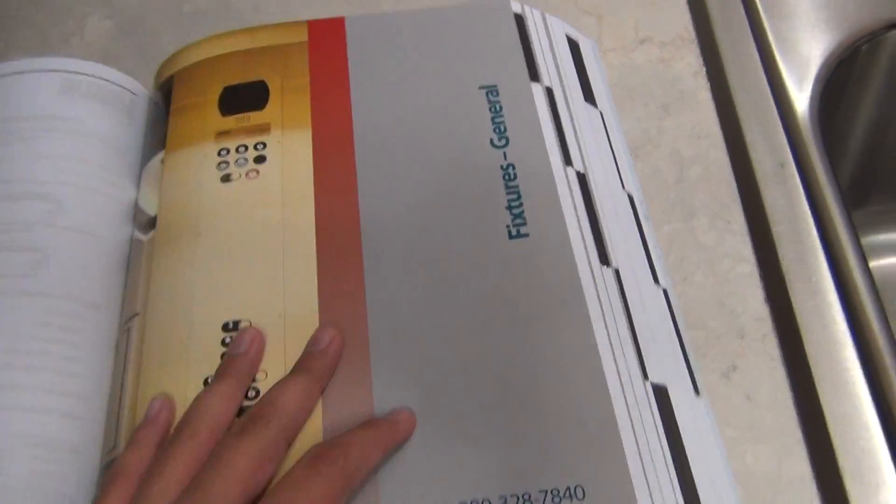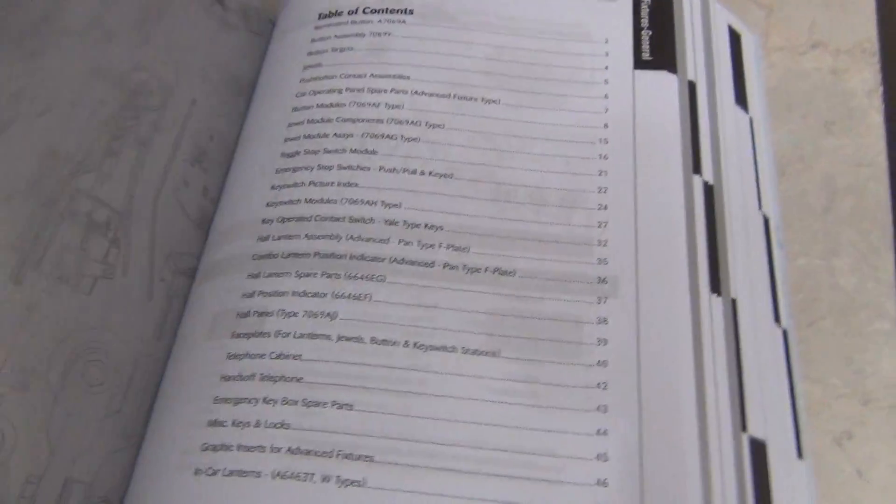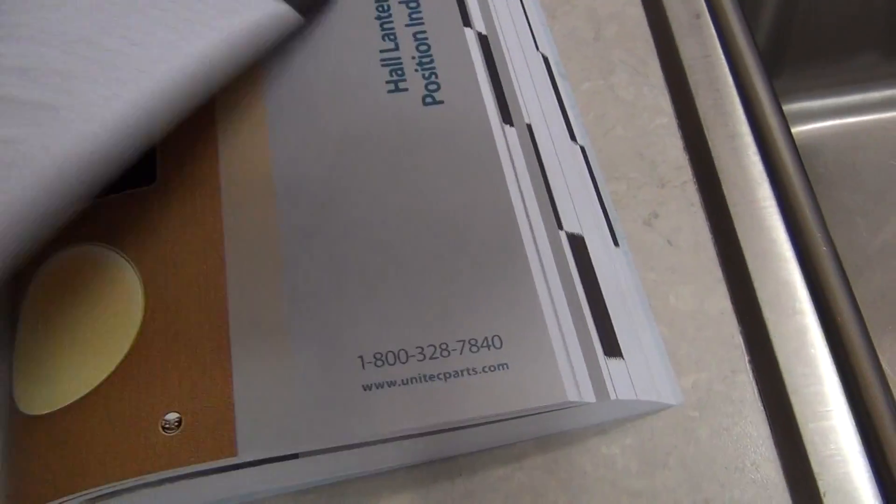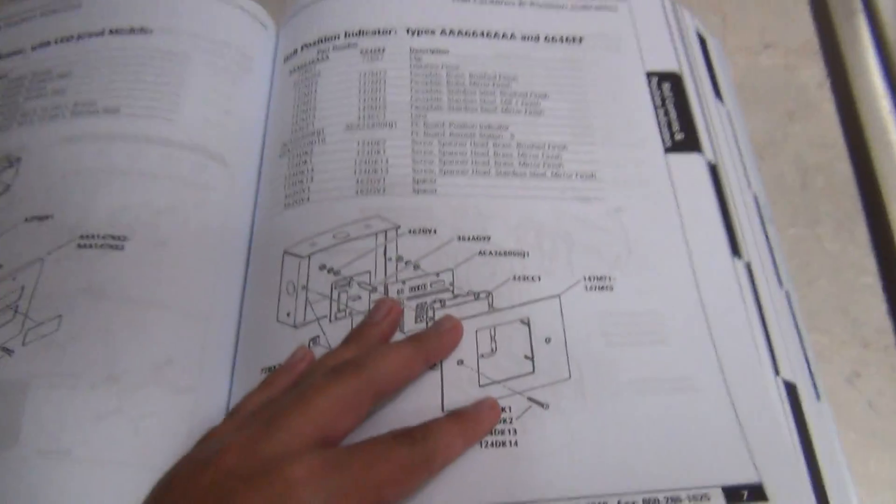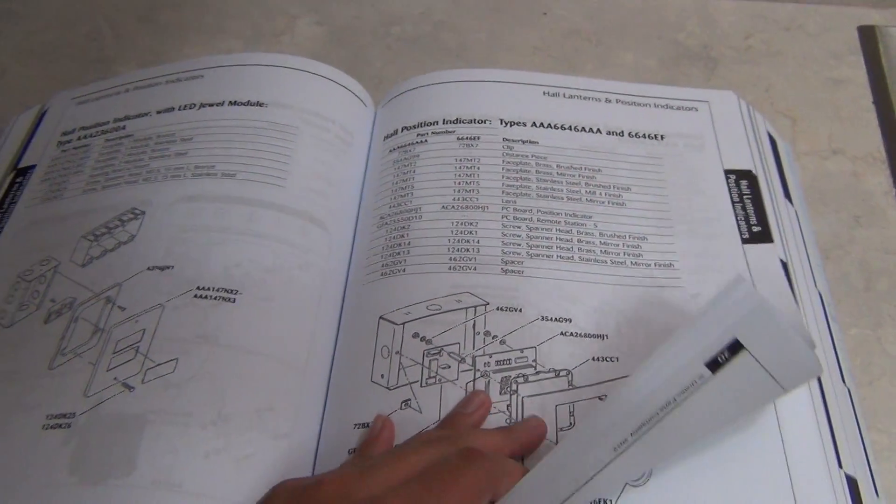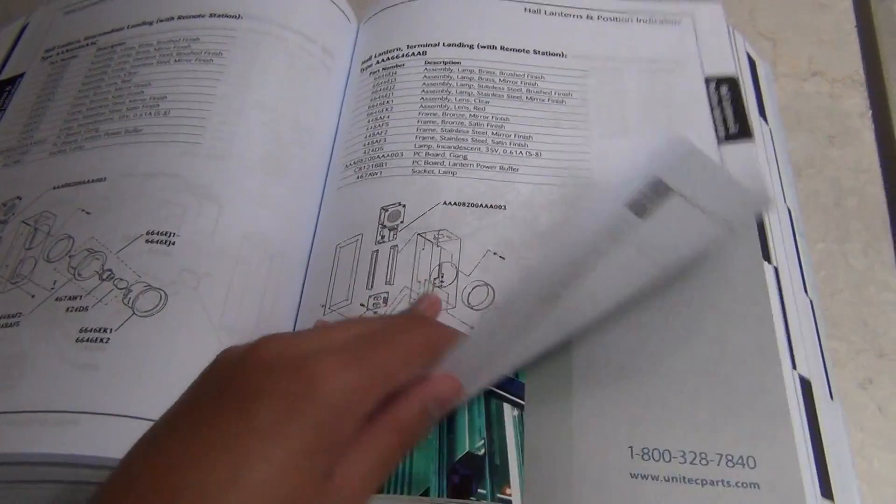Fixtures general, hall lanterns, hall lanterns and position indicators. And unfortunately this catalog does not have prices in it. And they don't really have an online catalog. Interlocks.